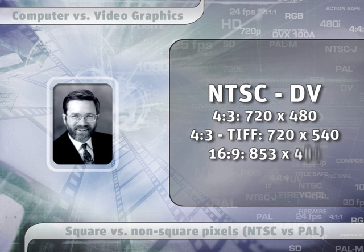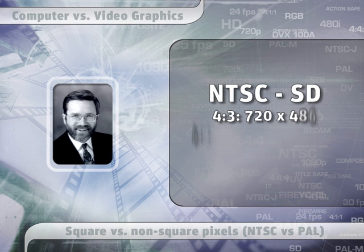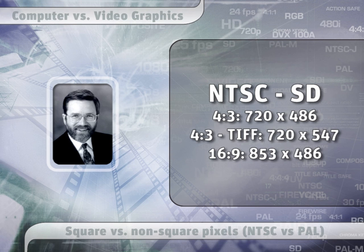The pixel size inside NTSC is different than a PAL pixel. If you're working with DV on NTSC, your 4x3 image is 720x480. If you need to compensate for the square versus rectangular pixel difference, you'll create 720x540. And if you're doing a 16x9 anamorphic, your graphic is 853 wide by 480 high.